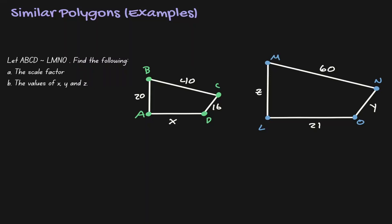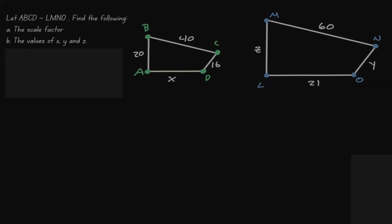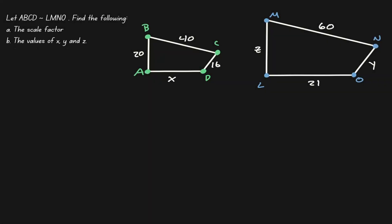Welcome. Let's take a look at some examples for similar polygons. We're given two similar polygons: ABCD, which is the figure on the left, and LMNO, which is the figure on the right.